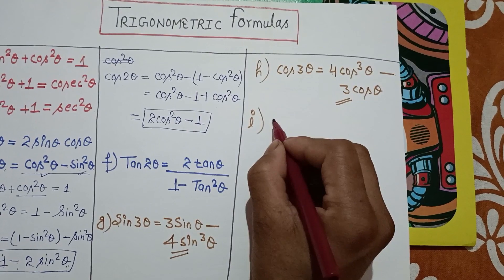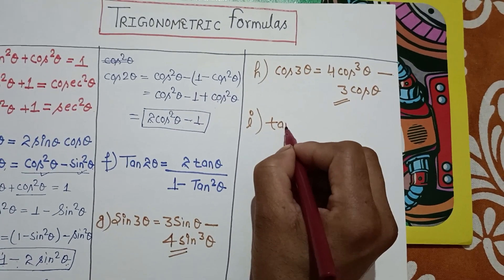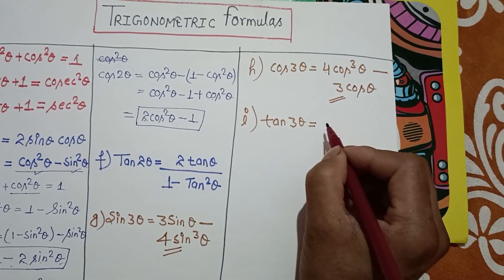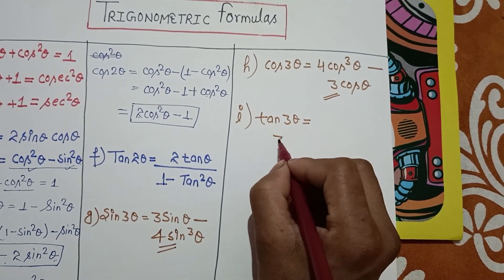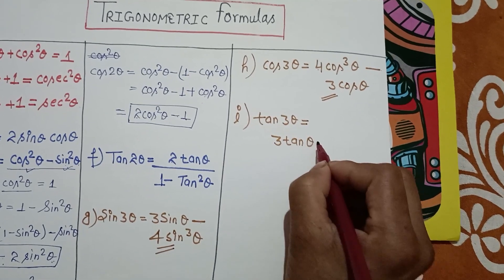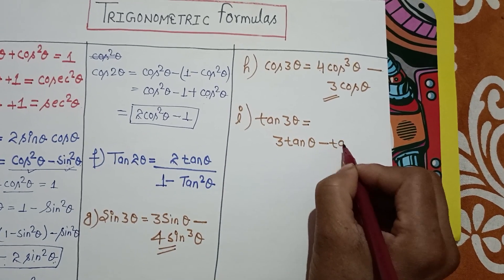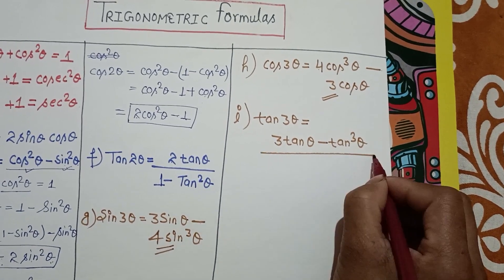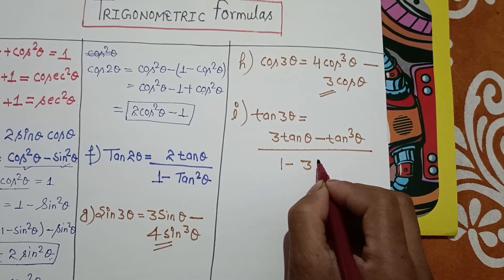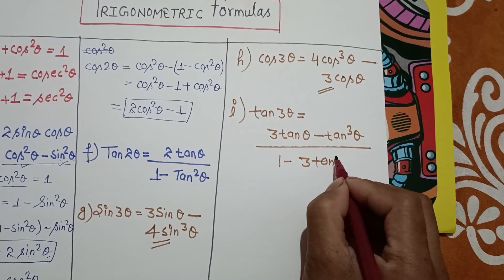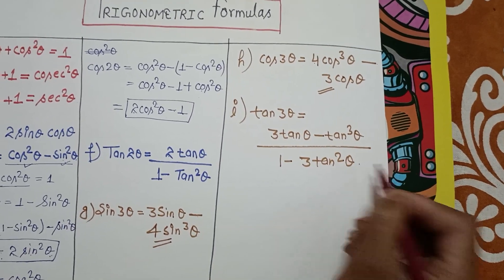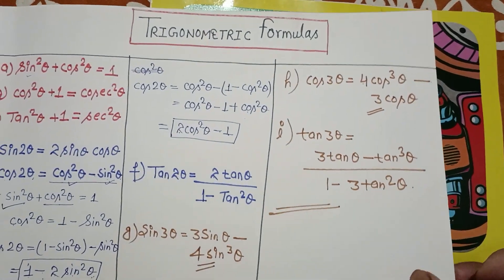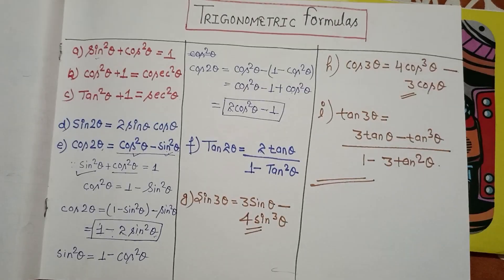The next formula is tan 3θ. The formula for tan 3θ is: tan 3θ = (3tan θ − tan³θ) / (1 − 3tan²θ). These are the basic trigonometric formulas you need to know.